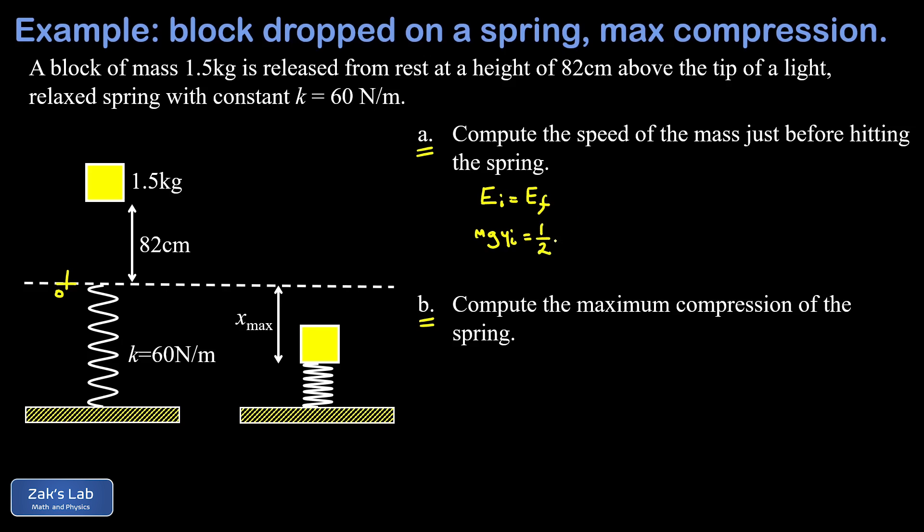And then in the final state when the block gets to the tip of the spring, all the energy is kinetic, so it's going to be one half m v final squared. So the m's cancel out of this and we can solve for v final. We multiply both sides by 2 and square root the result and we get a final speed of square root 2g y initial.